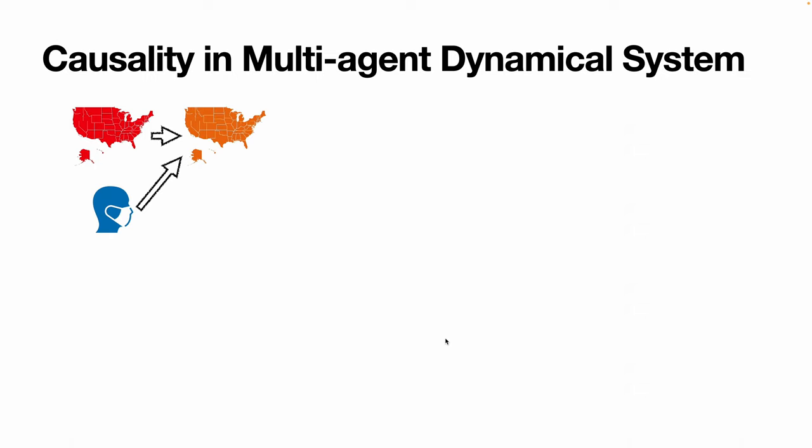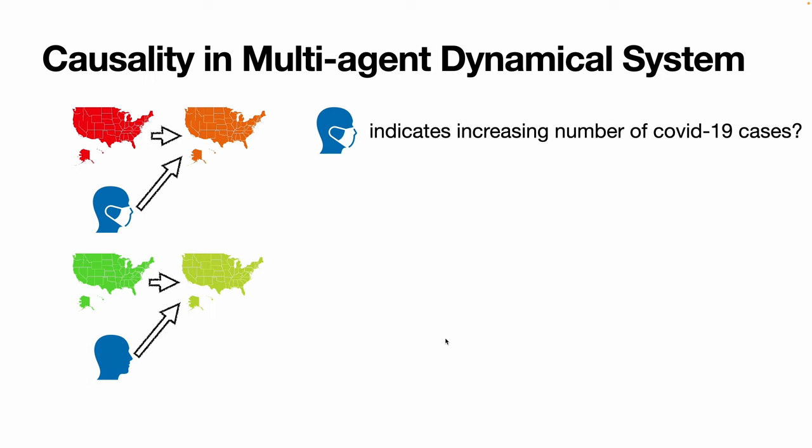For instance, mask mandates are typically introduced during surges in COVID-19 cases and may be paused when the number of cases decrease. Thus, the model could wrongly suggest that mask wearing indicates increasing number of COVID-19 cases. However, we know this is wrong.